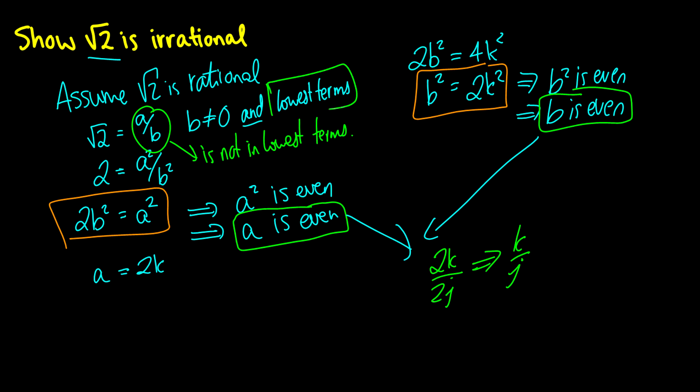Our lowest terms here is our ψ. We found out that it was not in lowest terms, which was our ¬ψ. And our assumption, so we have to show √2 is irrational, which is our φ. Our √2 is rational is our ¬φ.